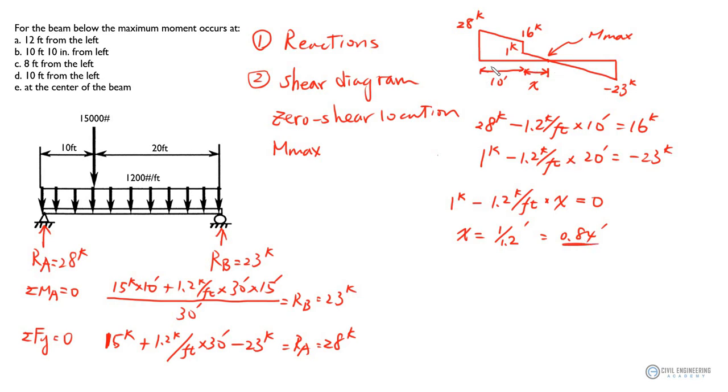So, now you know that zero shear is at 10 feet plus 0.84 feet, so that's 10.84 feet away from left. And this is going to be 10 feet, 10 inches. Alright, so your answer is B. Alright, so that's it for today. Thank you for watching.